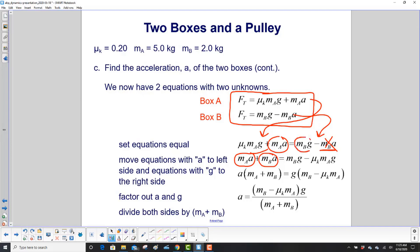Now let's look at the terms with G in it. Well M sub B G is already here. We need to move this guy mu K M sub A G over to the other side. How do we do that? We need to subtract it from both sides. So when you subtract it from the left side, it goes away.